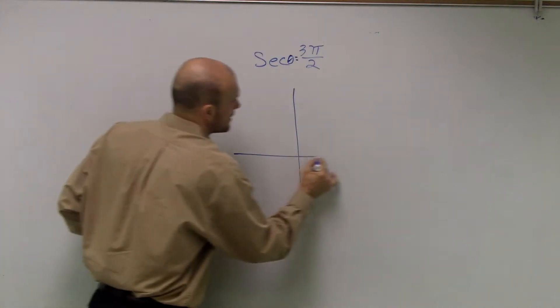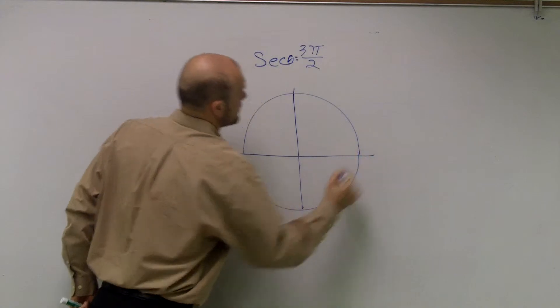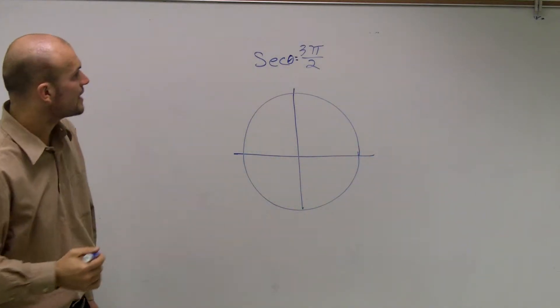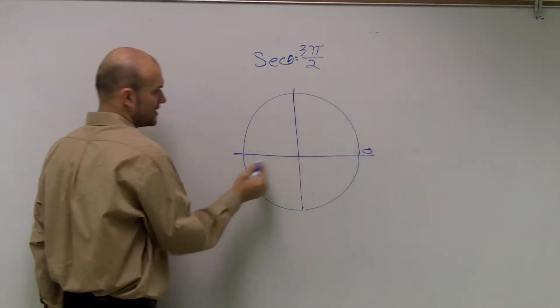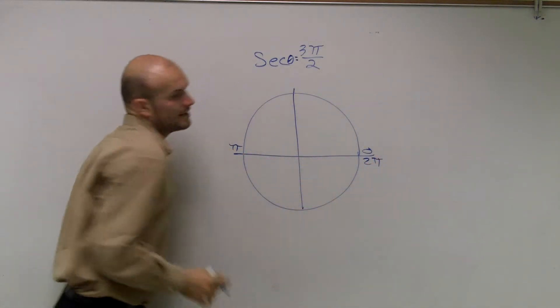I'll draw a unit circle. If I start here, that's 0, that's π, and here's 2π.